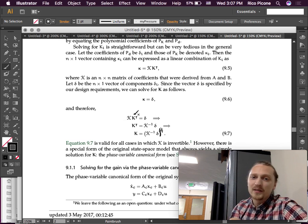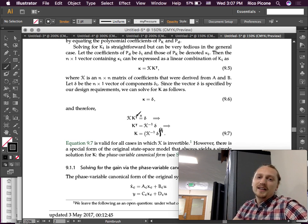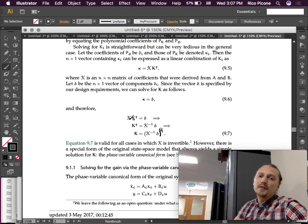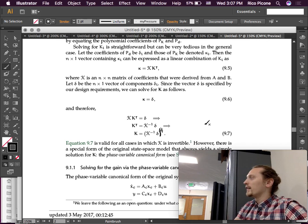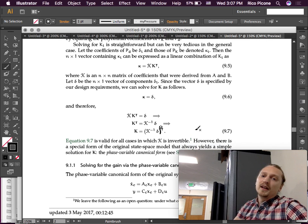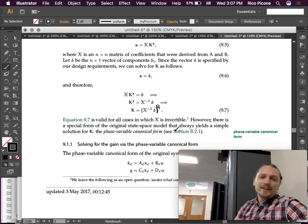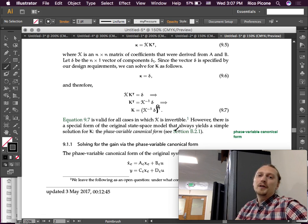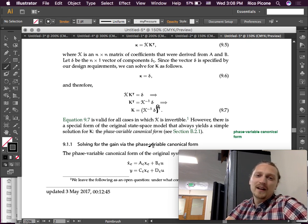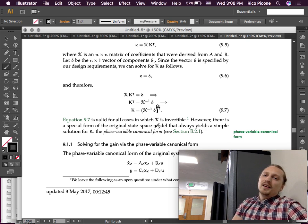We want to solve this for the gains. If we left multiply both sides by script K inverse, then we get that. And then that last line, 9.7, is what we get if we take the transpose of both sides. We've solved for what the gains are. As long as we can figure out what the hell this script K is, we know, and we're good.